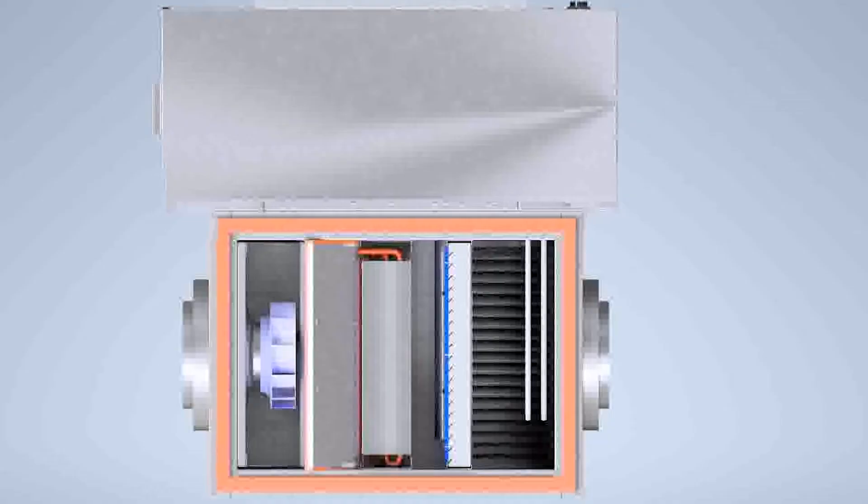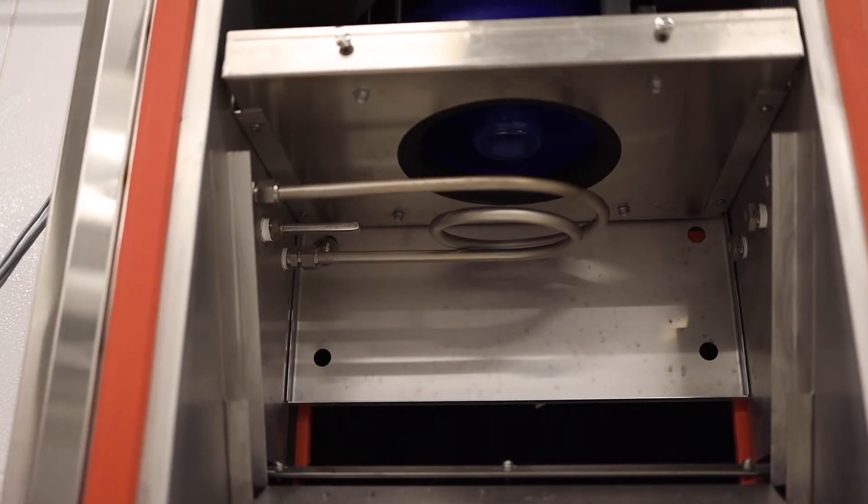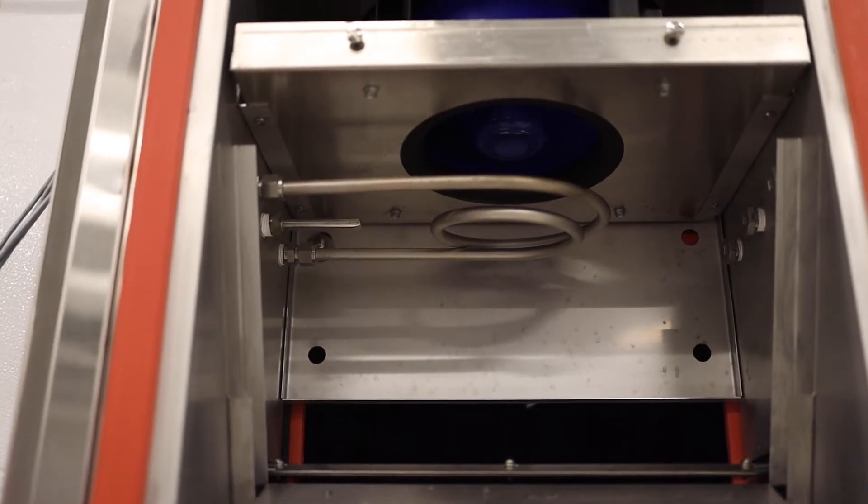leaves the spray chamber through a mist eliminator, which removes any excess water vapor, and is next mixed with air that has bypassed the spray area. After passing over an electric heater to heat the air back to the desired